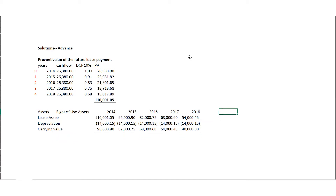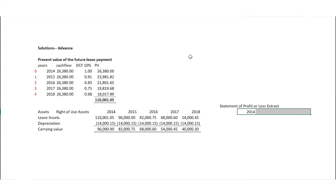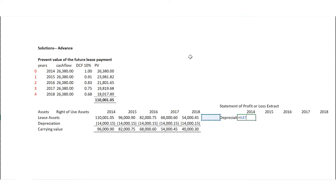So we have the statement of profit or loss extract. Just picking 2014 again and scrolling down to have the same figures. But this time around it's the depreciation charge I'll be having here. For those using Excel, you can just repeat the figures as you have them. The depreciation charge is constant over the period as well.